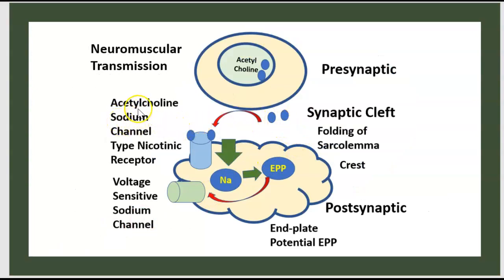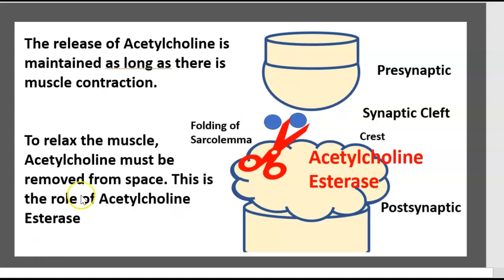Acetylcholine acts on the acetylcholine-sodium channel (nicotinic type), leading to the penetration of sodium, which mediates the end-plate potential that acts on voltage-sensitive sodium channels. The release of acetylcholine is maintained as long as there is muscle contraction. To relax the muscle, acetylcholine must be removed from the synaptic cleft — this is the role of acetylcholinesterase.